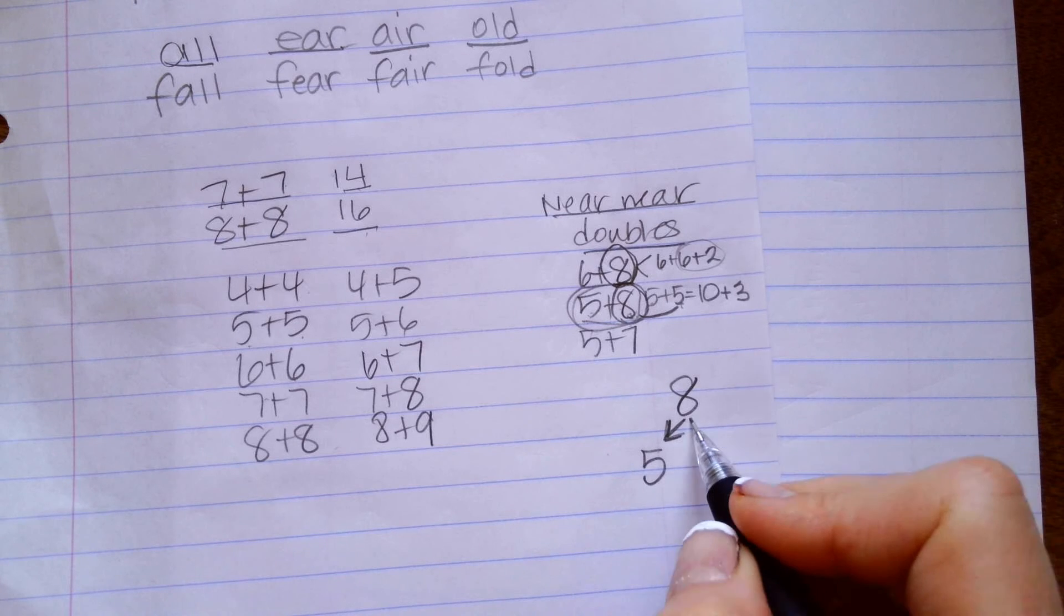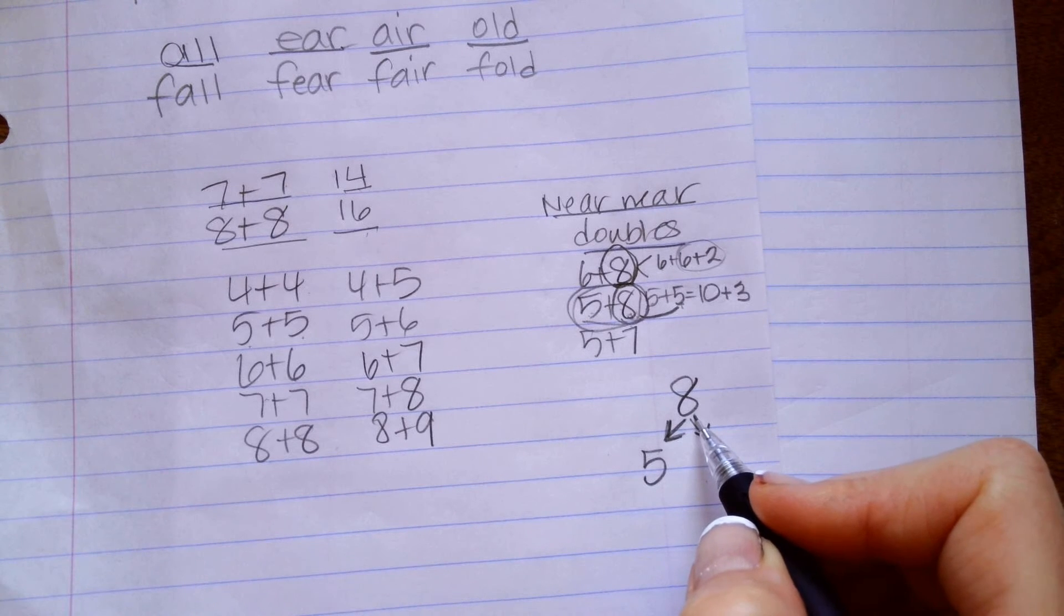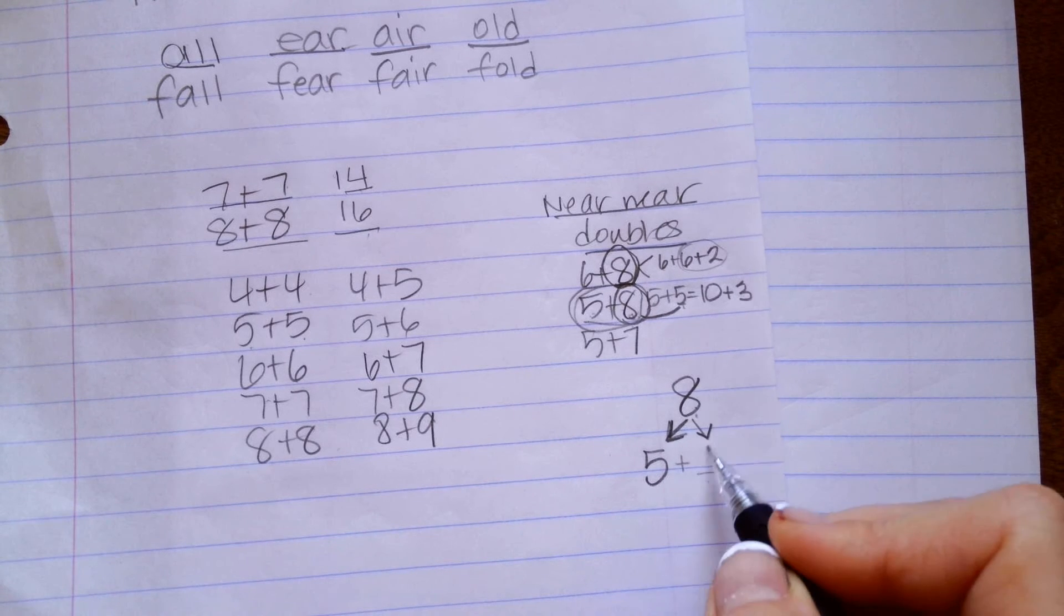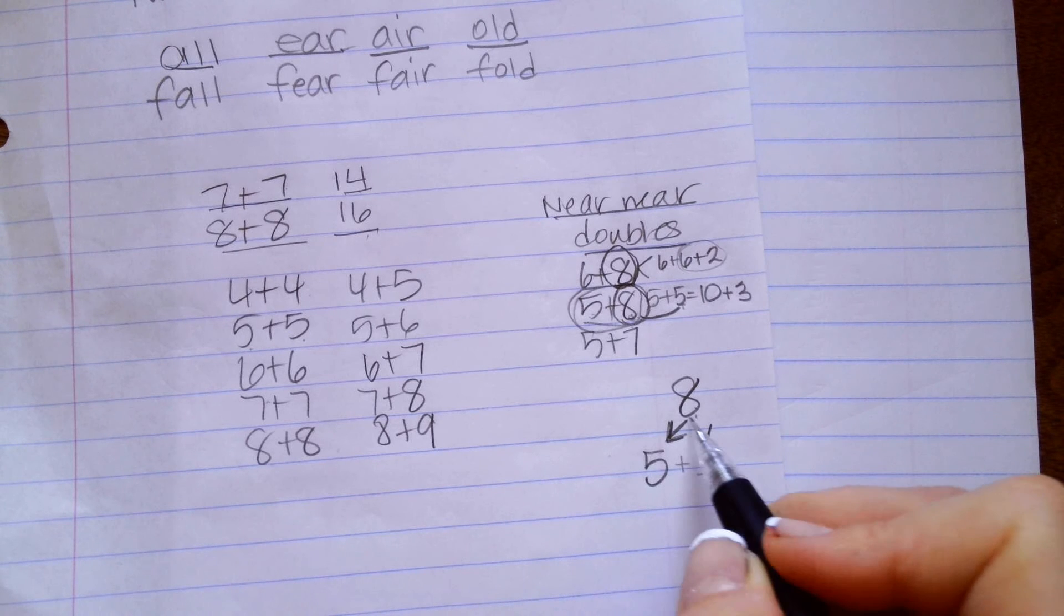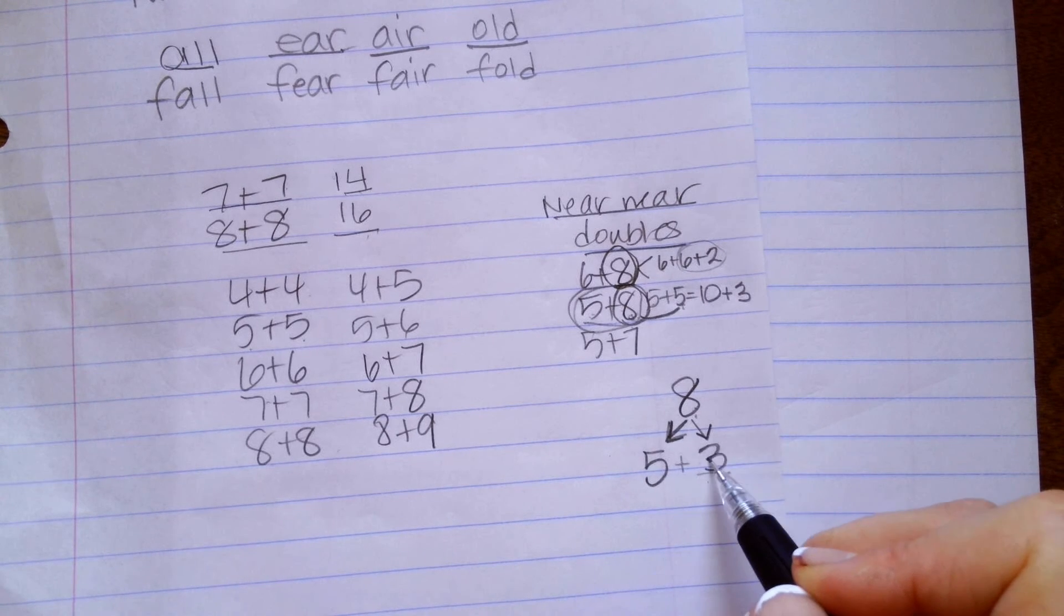If I change this number to a 5, I have to add something to it because it's obviously not a 5. I can't change 8 to a 5. So, I'm going to say 5 plus something equals 8. Oh,